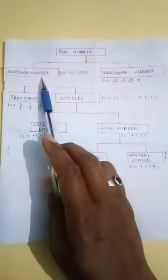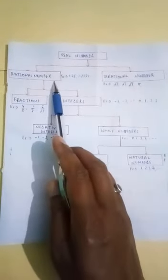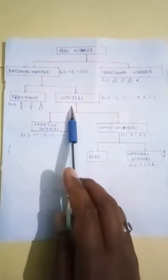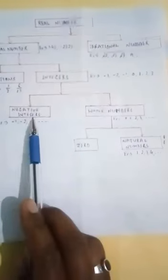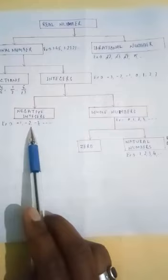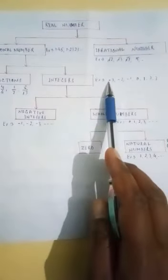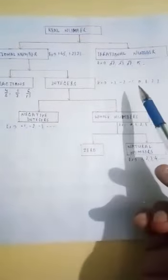Now check this flowchart. Real numbers include rational numbers and integers. Rational numbers include fractions and integers. Integers include negative integers and whole numbers — for example, -1, -2, -3.